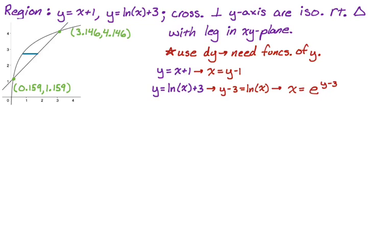All right. So now what we want to do is kind of just think about what's happening here. So this part right here is right takeaway left. So it's the line minus the natural log type thing. But I need it in terms of y. So it's the quantity y minus 1 minus the quantity e to the y minus 3. I don't really need that quantity there, the second one.